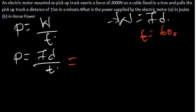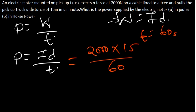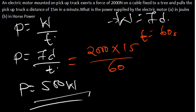So we have: power = 2000 × 15 ÷ 60. That gives us 2000 times 15 divided by 60, which equals 500 watts. So power is 500 watts — that is the answer for part (a).